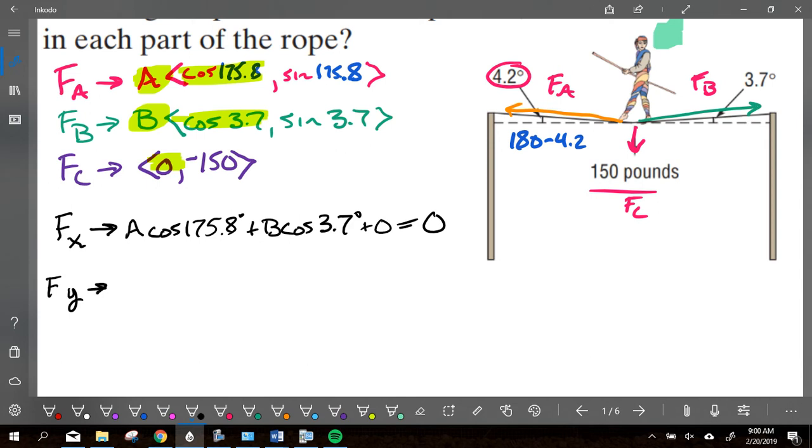Same thing for our Y force. Our Y force, we're taking all the Y values here. So we're taking this guy. We're taking this guy. We're taking this guy. We're adding them all together, multiplying by our factor there. So it's A, sine of 175.8 plus B, sine of 3.7 degrees minus 150 is going to be all equal to zero. All three of those forces, one of them is negative. Two of them are pulling them up. The other one's pushing them down. All of those together need to get a zero.